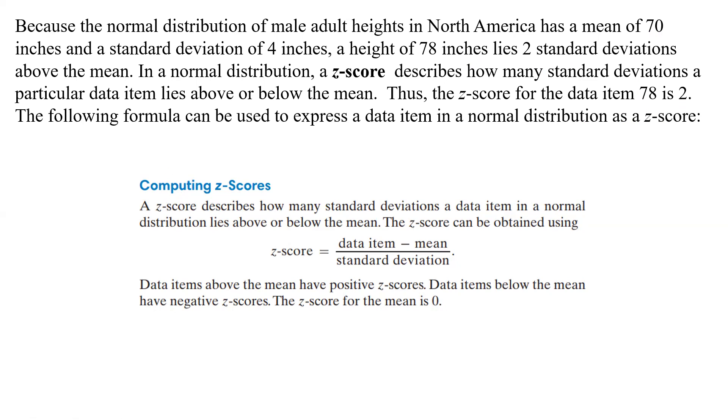A z-score describes how many standard deviations a data item in a normal distribution lies above or below the mean, depending on if it's negative or positive. The z-score is obtained by taking the data item minus the mean divided by the standard deviation.